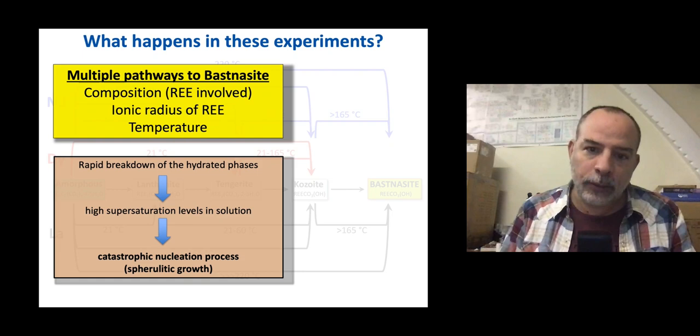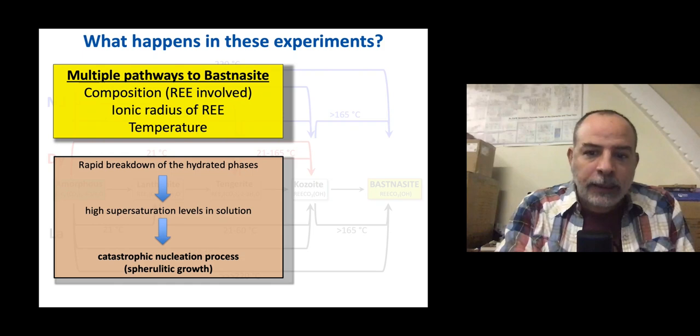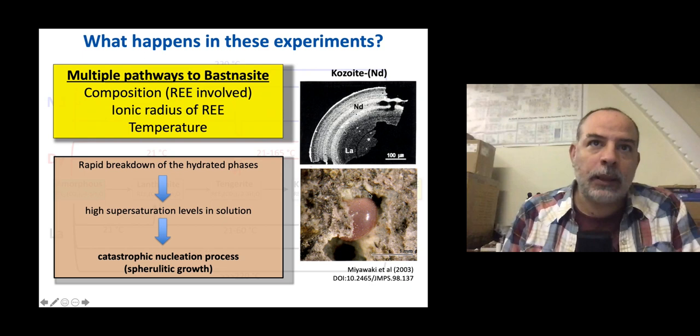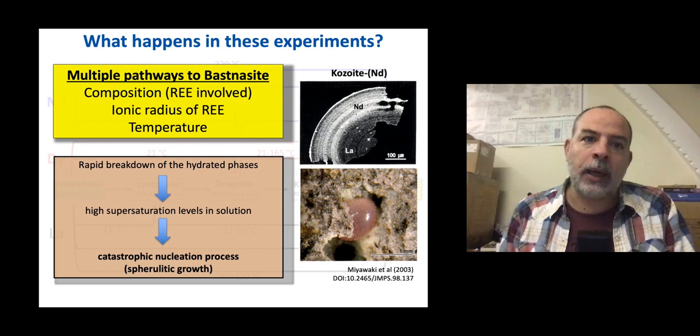Have we found this in nature? In fact, there are images suggesting spherulitic growth processes could be taking place in rare earth carbonates. Some kozoite crystals from different publications have a spherulitic shape, so we cannot discard that spherulitic growth could be happening in fluids containing carbonates and high concentrations of rare earth ions.